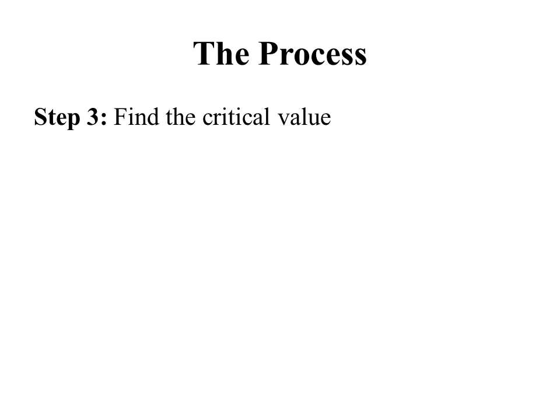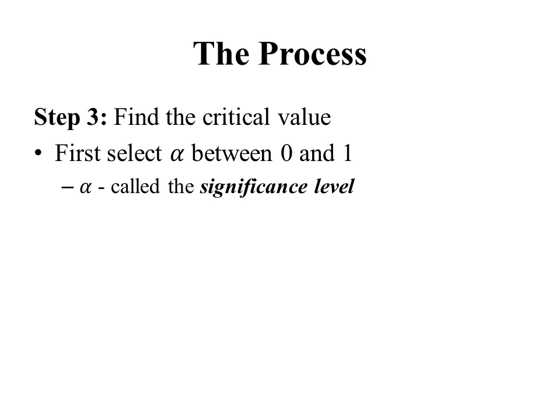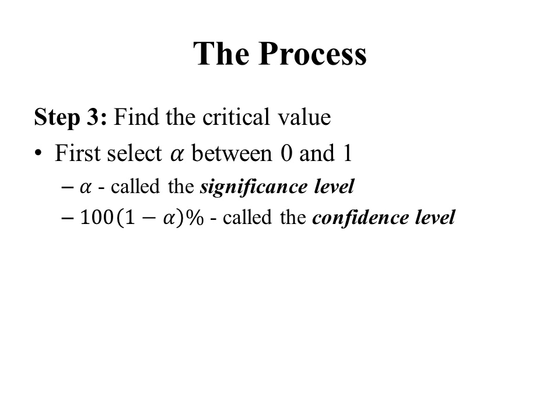The third step is to find the critical value. Different hypothesis tests have different types of critical values — a critical z value, a critical t value, or a critical chi-squared value, depending on the type of test. Before finding the critical value, we first need to select a number alpha between 0 and 1. This alpha is called the significance level, and the number 100 times (1 minus alpha) percent is called the confidence level — the same terminology and notation we used in Chapter 4 for confidence intervals.